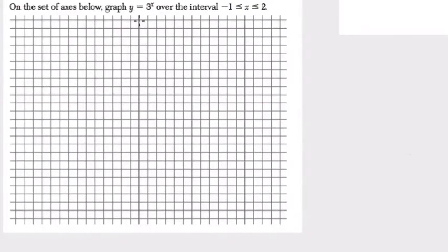We've got y equals 3 to the x, and when I want to graph it in this interval, negative 1 to 2, we set up a table with our x and our y values. Now y is equal to 3 to the x. That's the equation. So for the y value, I'll just write 3 to the x.